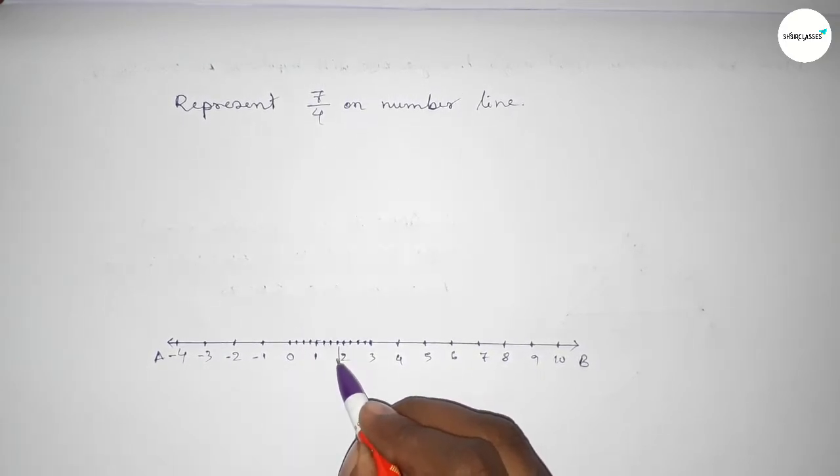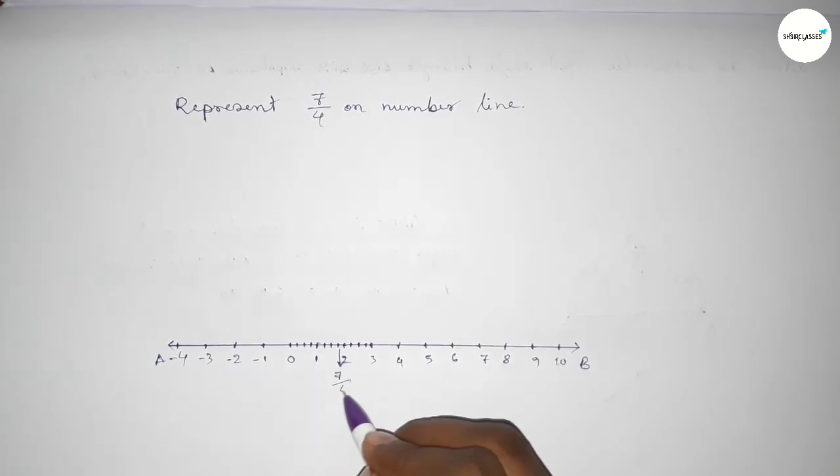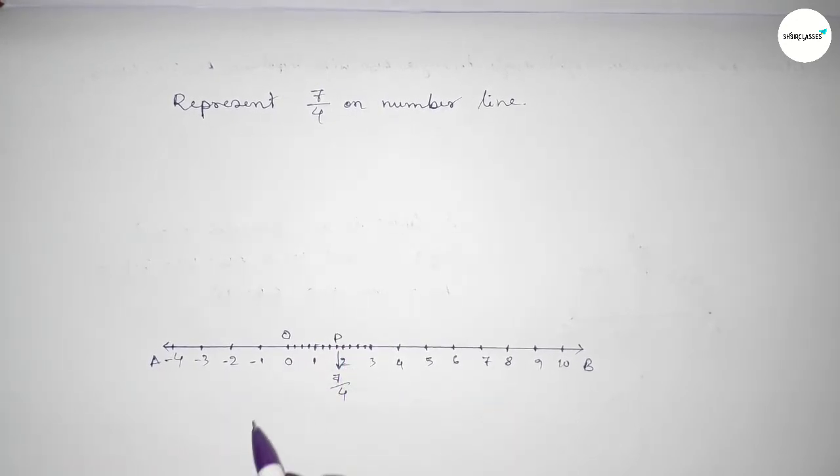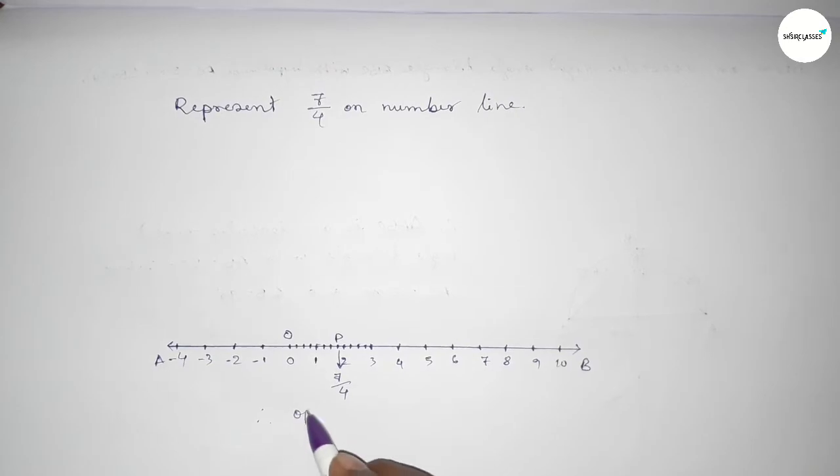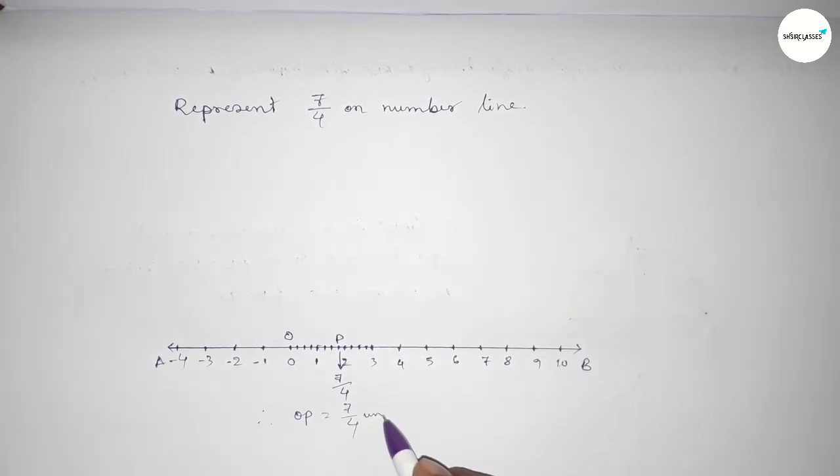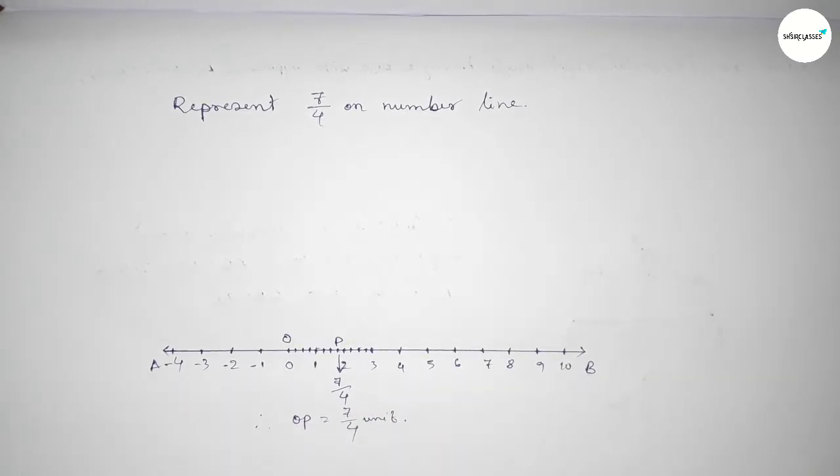So O and P, therefore OP equals 7/4 unit. That's all. Thanks for watching. If this video is helpful to you, then please share it with your friends. Thanks!